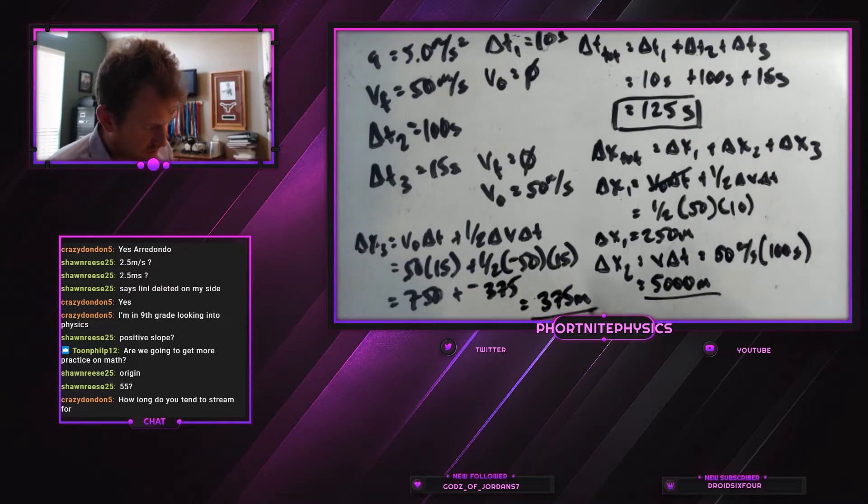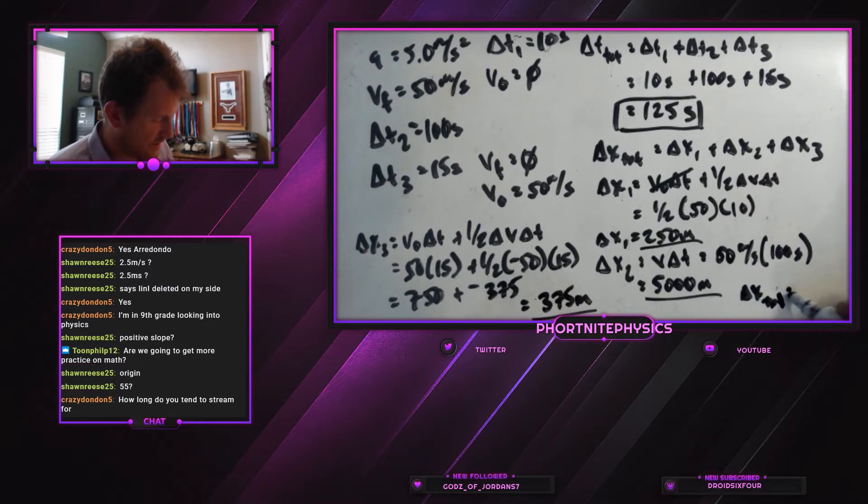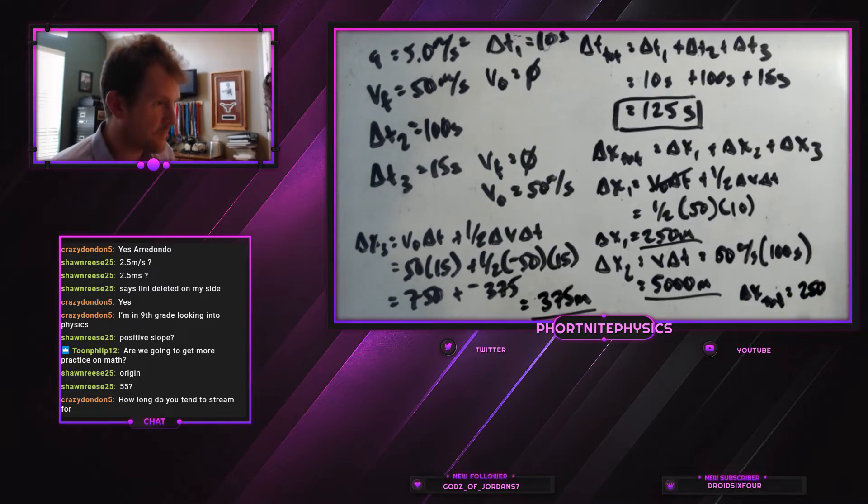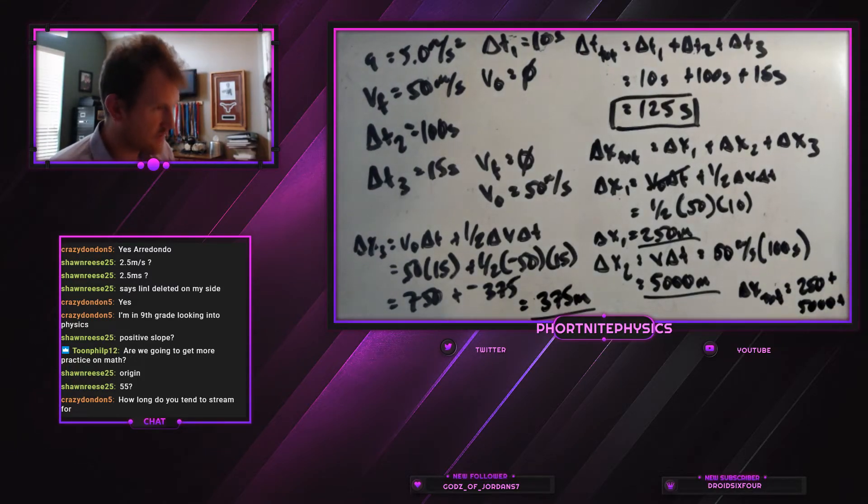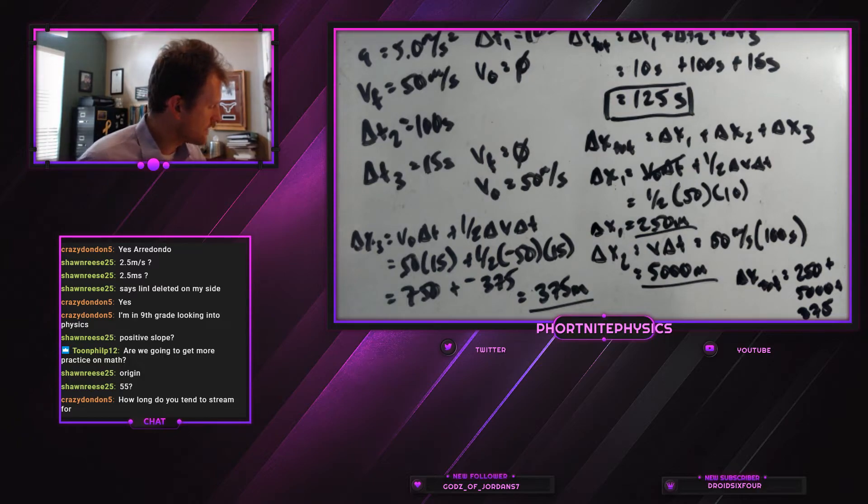So now we know our delta x's for all three sections. And we can just go ahead and plug those in to find out our delta x total, which is 250 plus 5,000 plus 375.